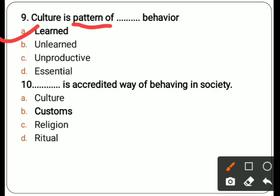Tenth question: dash dash is an accredited way of behaving in society. Options are culture, customs, religion, ritual. The correct answer is custom — customs are already established and we simply follow or behave according to them.